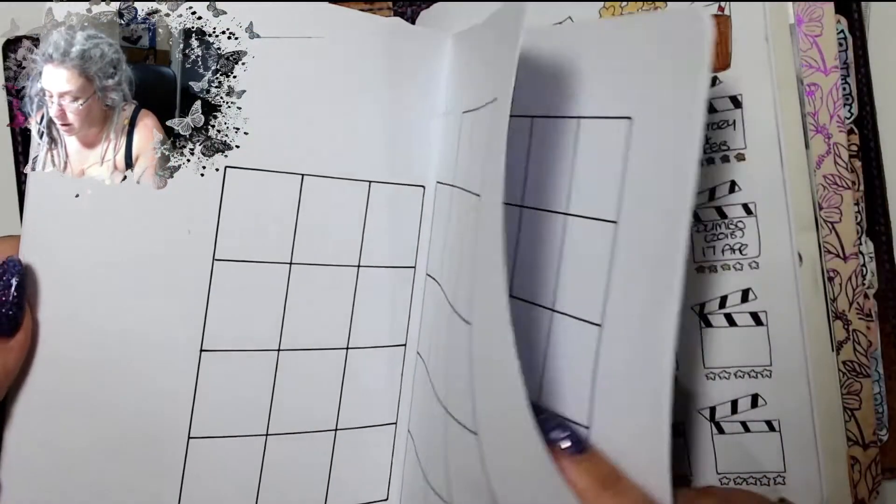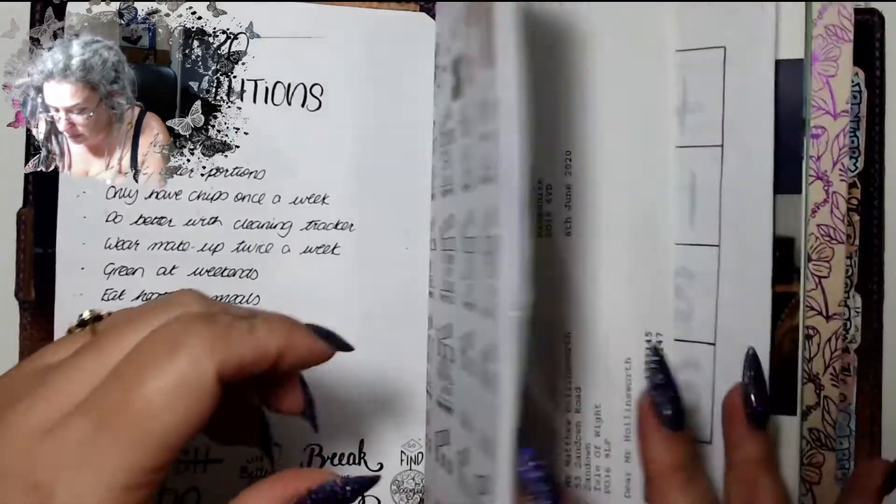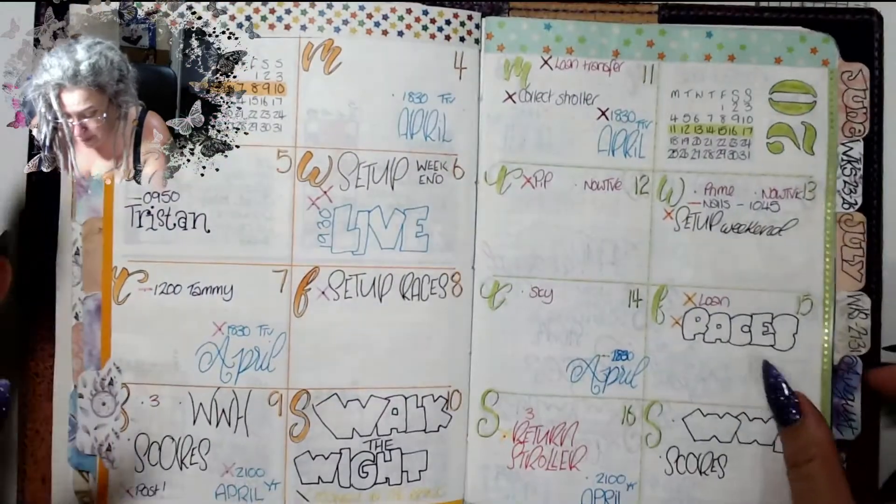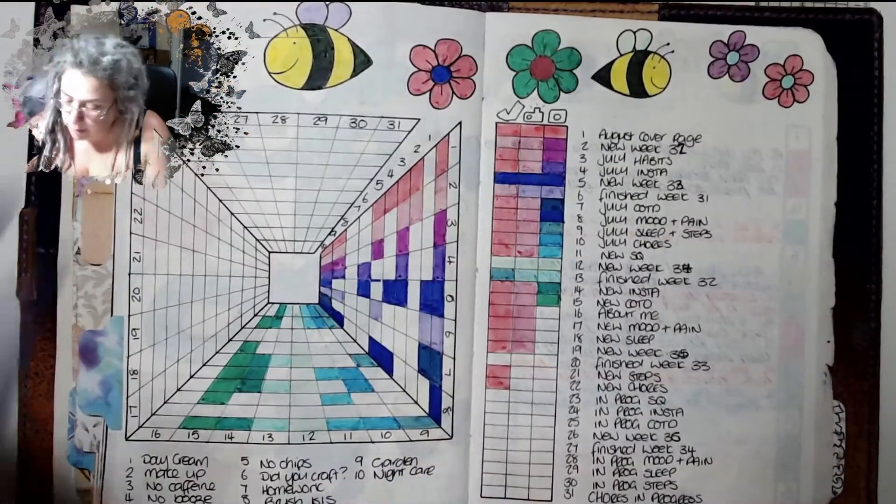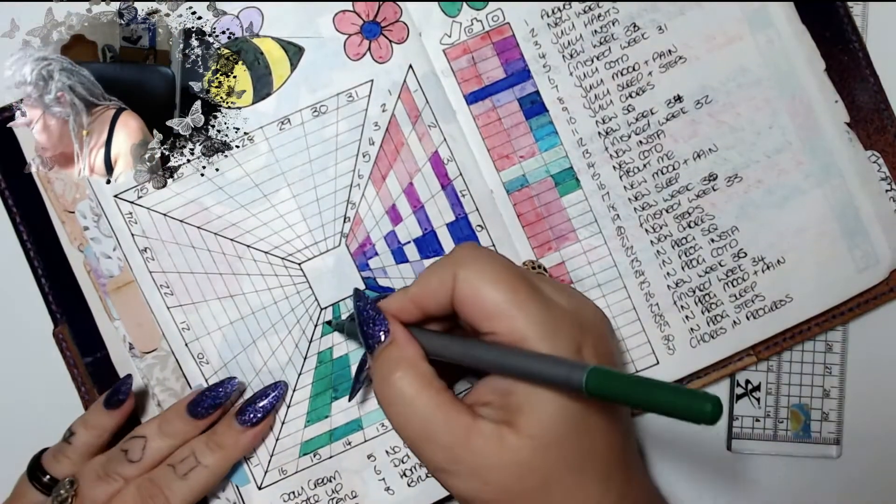So yeah. But at least I've only got a couple to do now. I've only got April, March, February and January to do. Thankfully drawing months doesn't take too long. Anyway, that's, yeah, that's beside the point. Okay. Where are we? I'm tired. That's where we are.